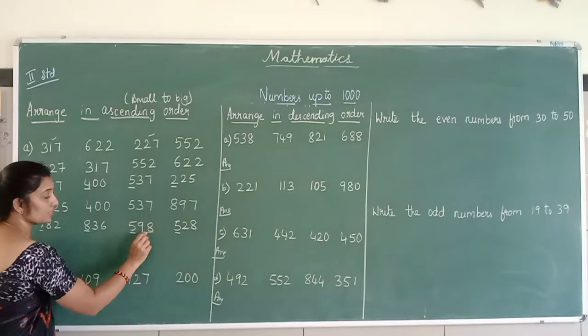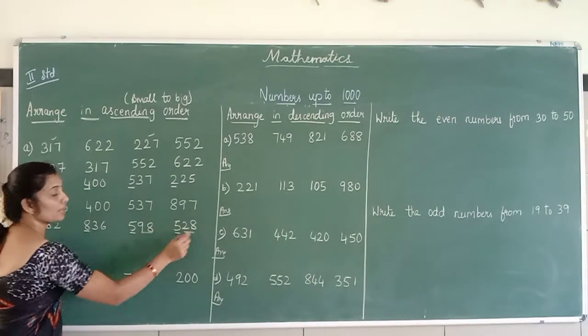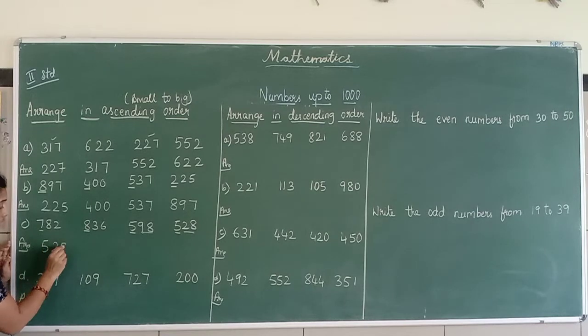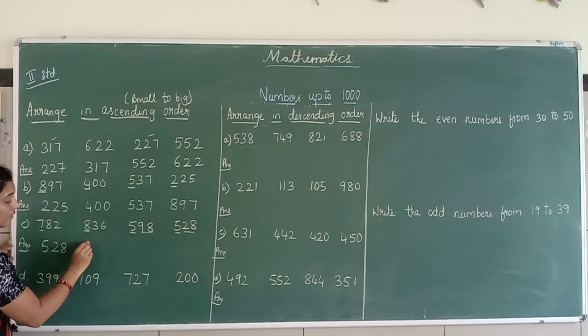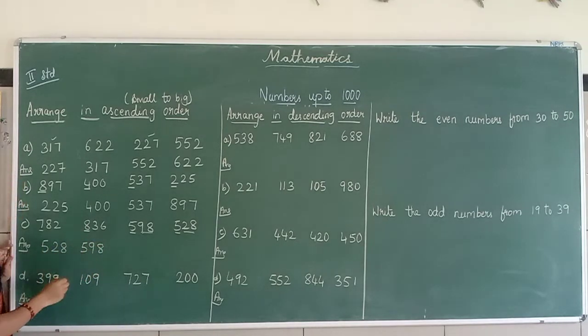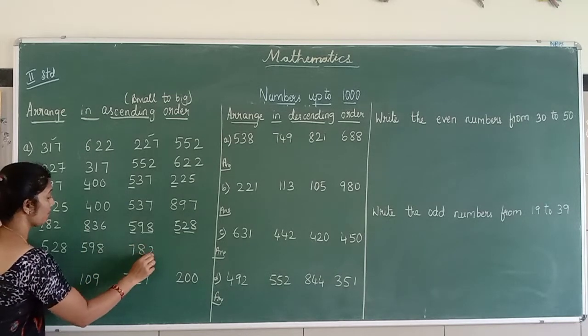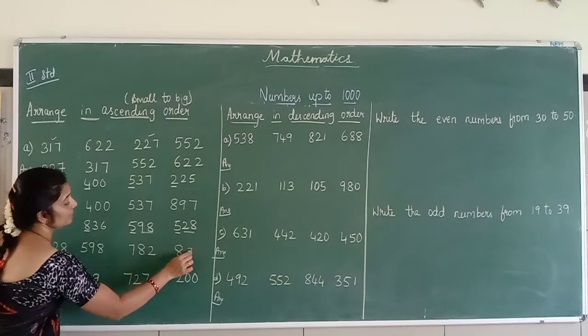So I move to the second digit number. 98 is smaller, 28 is smaller. 28 is smaller, so 528. After 528, you have 598. After 598, you have 782. After 782, you have 836.